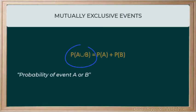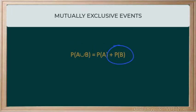When we calculate the probability of mutually exclusive events or the probability of event A or event B, remember both of the events cannot occur simultaneously. So either one or the other must occur. We can use this equation. This reads as the probability of event A or B is equal to the probability of event A plus the probability of event B.